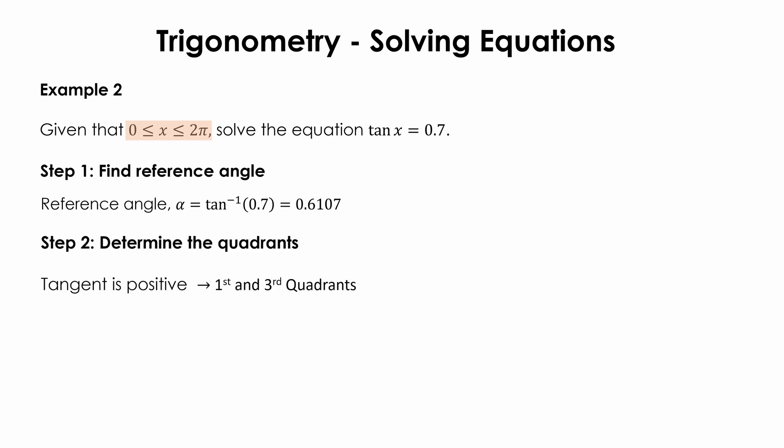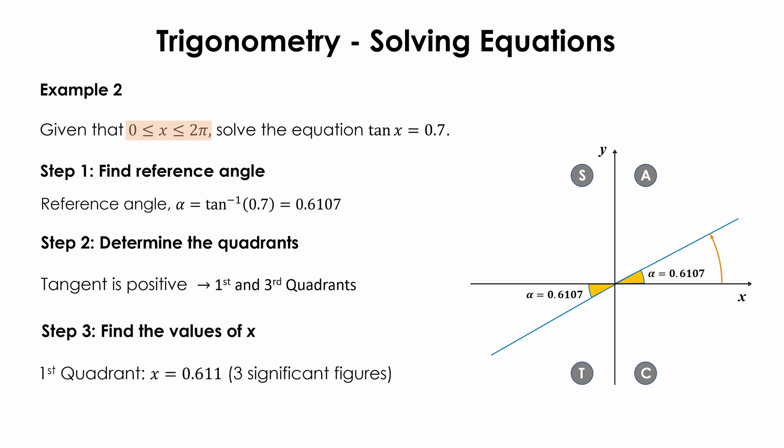Tangent is positive. Using the ASTC rule, x will lie in the first and third quadrant. In the first quadrant, x has the same value as the reference angle, which is 0.6107. In the third quadrant, x equals π plus 0.6107, which is 3.75. Therefore, the two values of x are 0.611 and 3.75.